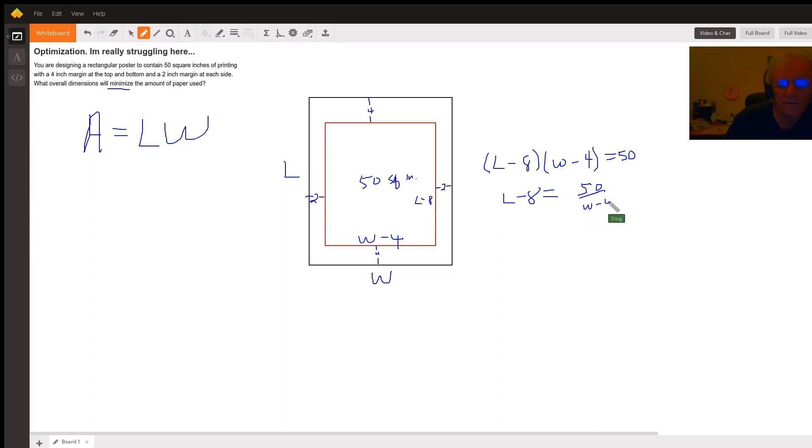So, we could have just as easily solved for W, but L equals 50 over W minus 4 plus 8. So, we're going to use this fact right here to rewrite A as a function of W.